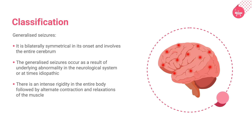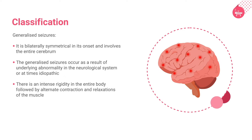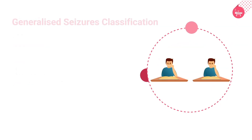Generalized seizures are a separate category of epileptic seizures which, unlike partial seizures, involve the entire brain. The neuronal firing is bilaterally symmetrical and involves both hemispheres of the brain. They occur as a result of underlying abnormality in the neurological system, or may be of unknown cause. During seizure activity, there is intense rigidity in the entire body, followed by alternate contractions and relaxation of the muscles.